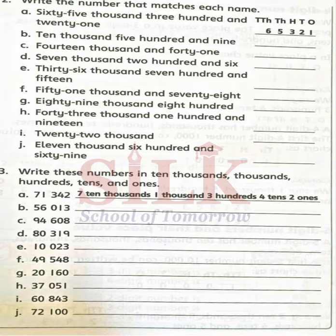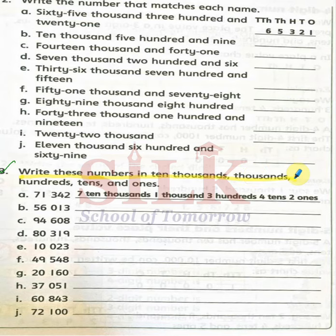Open your book, page number 11. We will start the previous lecture's questions. We have completed question number 2. Write these numbers in 10,000s, 1,000s, 100s, and 1s. I will do the first question for you, so we will take charge from the second one.